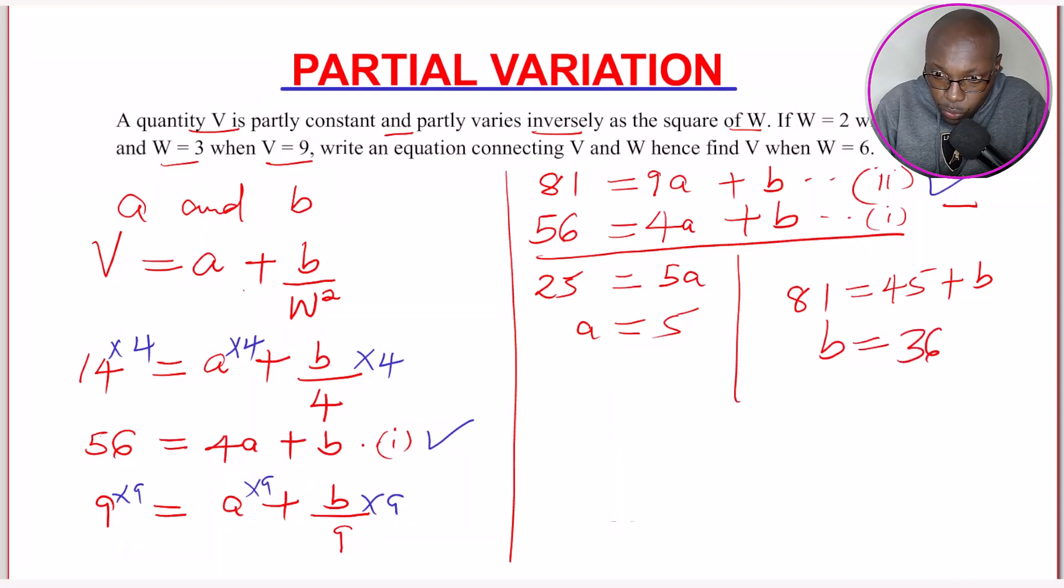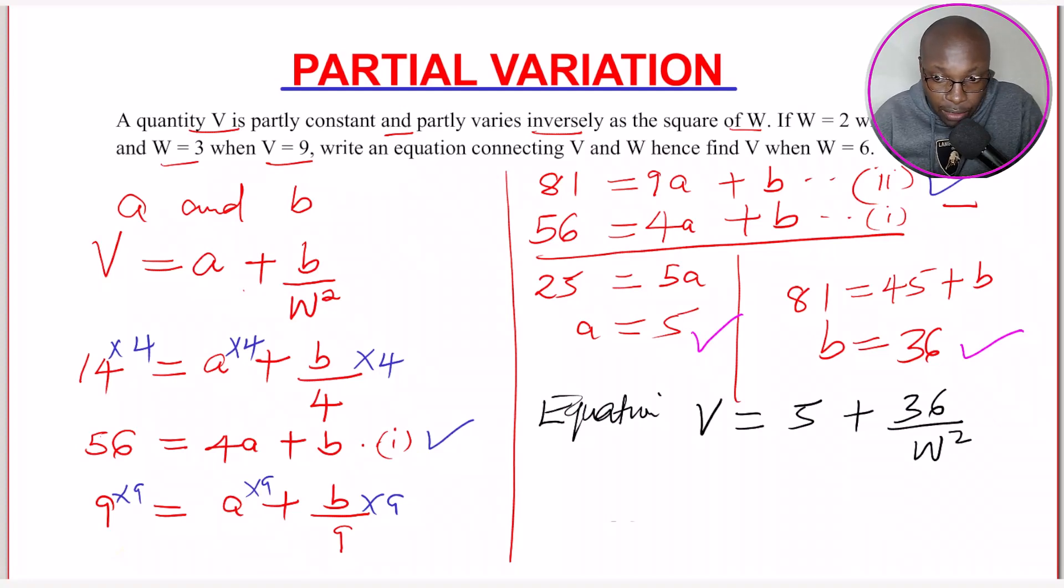So now you have the two constants. You have A and B. So therefore, the equation, you can now write the equation. The equation now having to put there. The constants, V = A is 5, then plus B is 36 divided by W squared. That is the relationship connecting V and W.